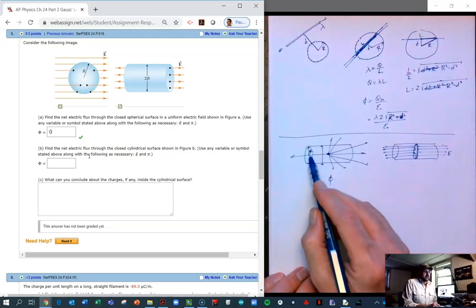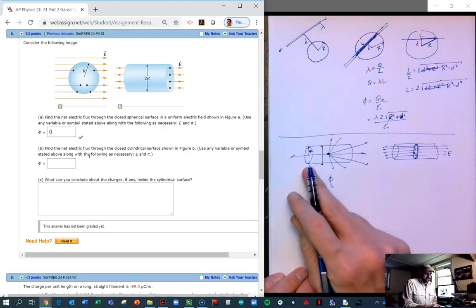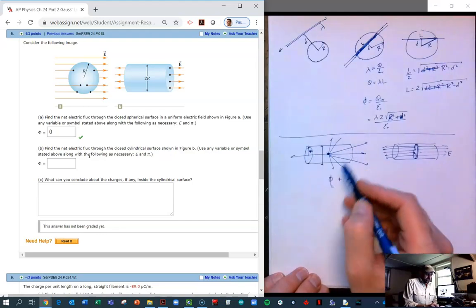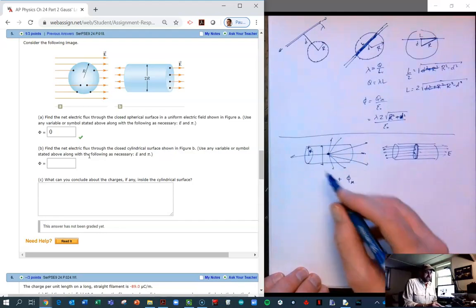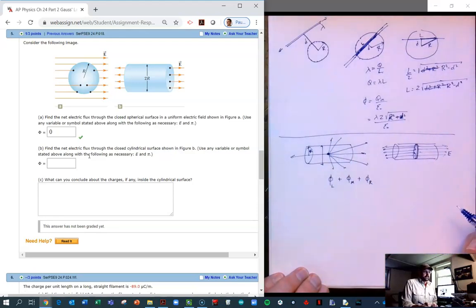And so what we're looking for here is the total flux. So we have three surfaces. We have the end of the left side of the cylinder, and then we have the flux through the middle part here, that cylindrical wrapper, plus the flux through the right side.